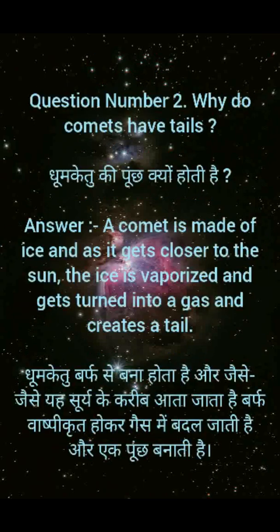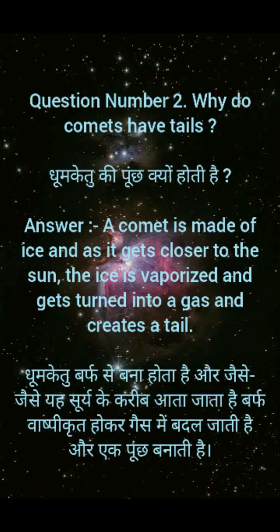Question No. 2: Why do comets have tails? Dhoon ke tu ki poonch kiyoong hoti hai? Answer: A comet is made of ice and as it gets closer to the sun, the ice is vaporized and gets turned into a gas and creates a tail. Dhoon ke tu barf se bana hota hai aur jaysay jaysay yeh surya ke kareeb aata jata hai, barf vashpikrit hokar gas mein badal jaati hai aur ek poonch banati hai.